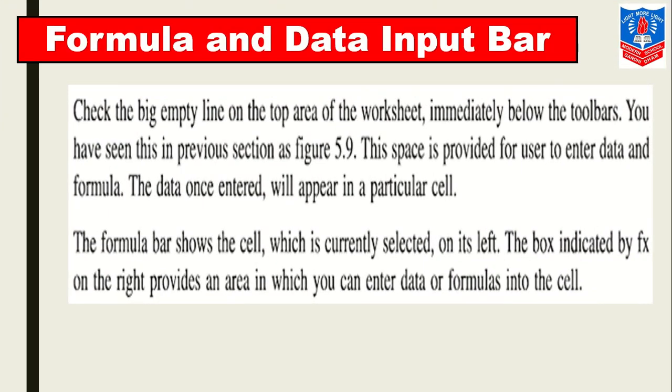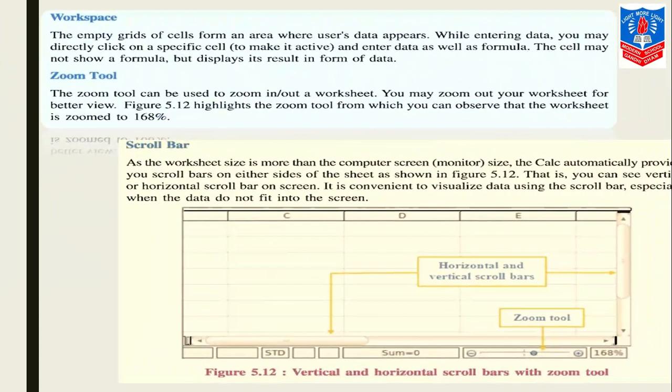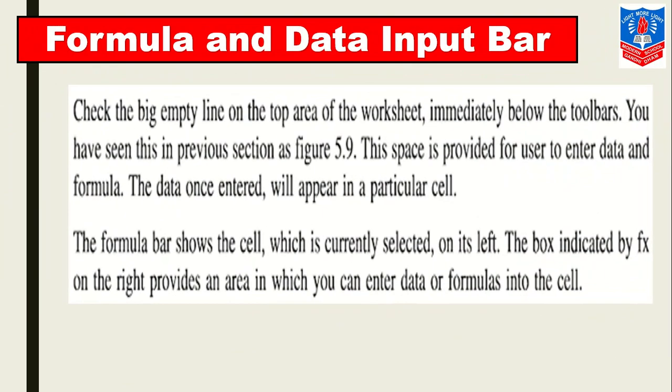Now we learn about formula and data input bar. Check the big empty line on the top area of the worksheet, immediately below the toolbars. You have seen this in the previous section. This space is provided for users to enter data and formulas. The data once entered will appear in a particular cell. The formula bar shows the cell which is currently selected. On its left, the box indicated by FX on the right provides an area in which you can enter data or formulas into the cell.